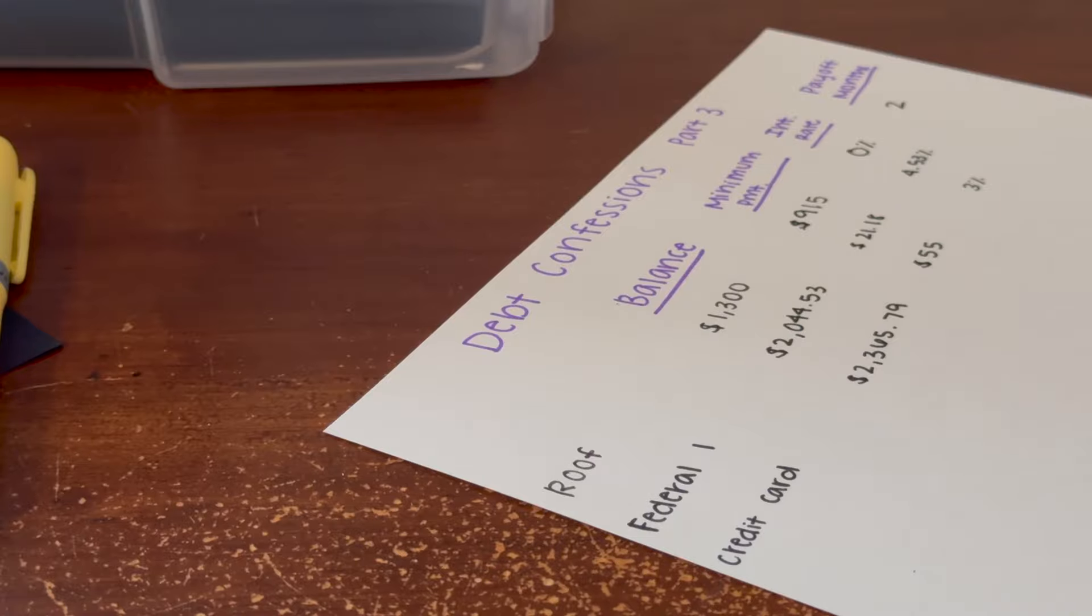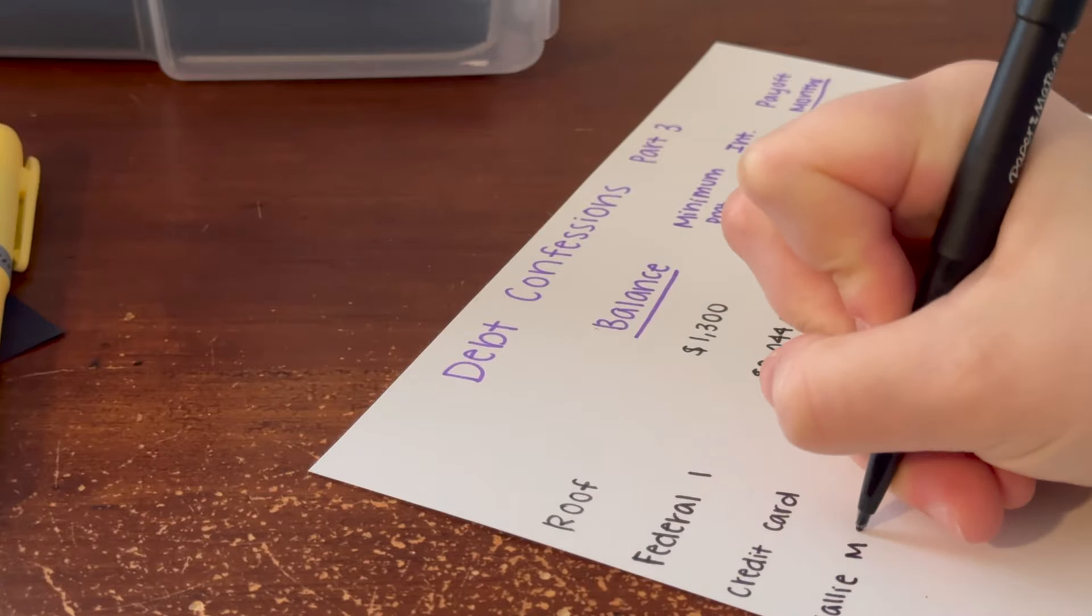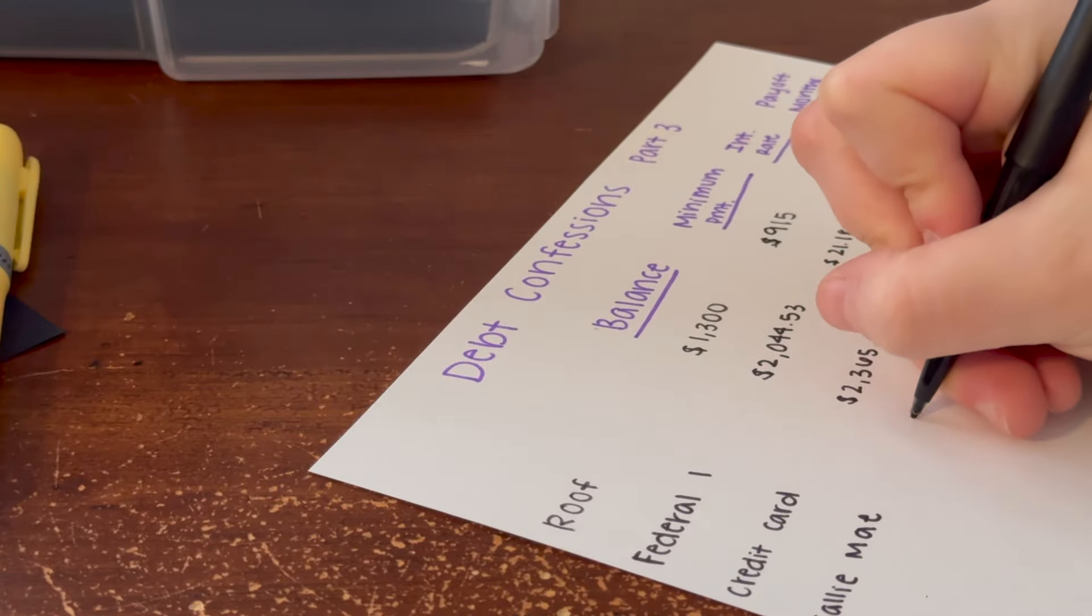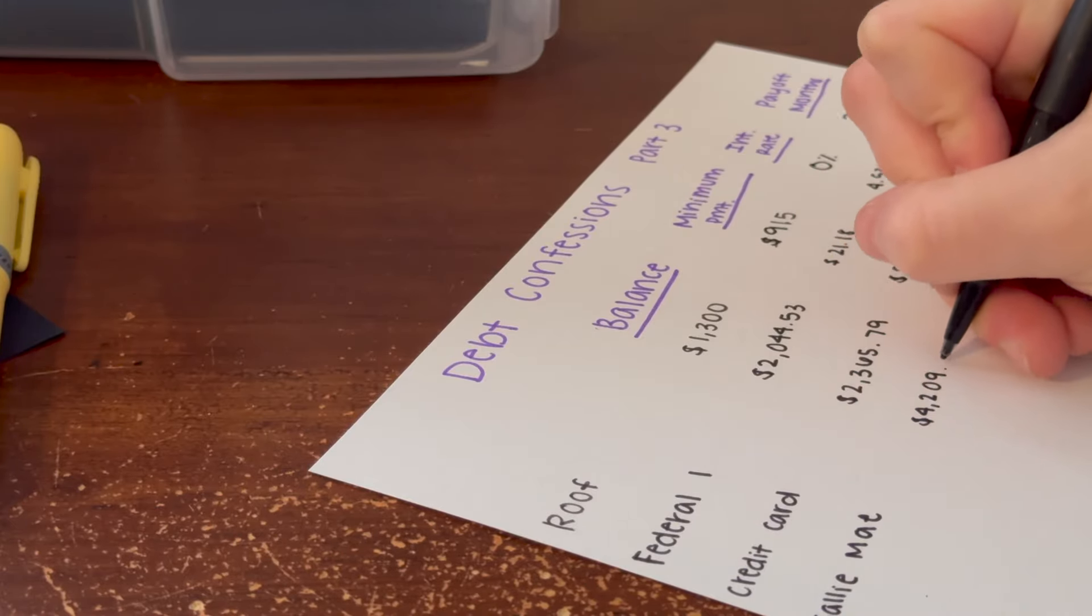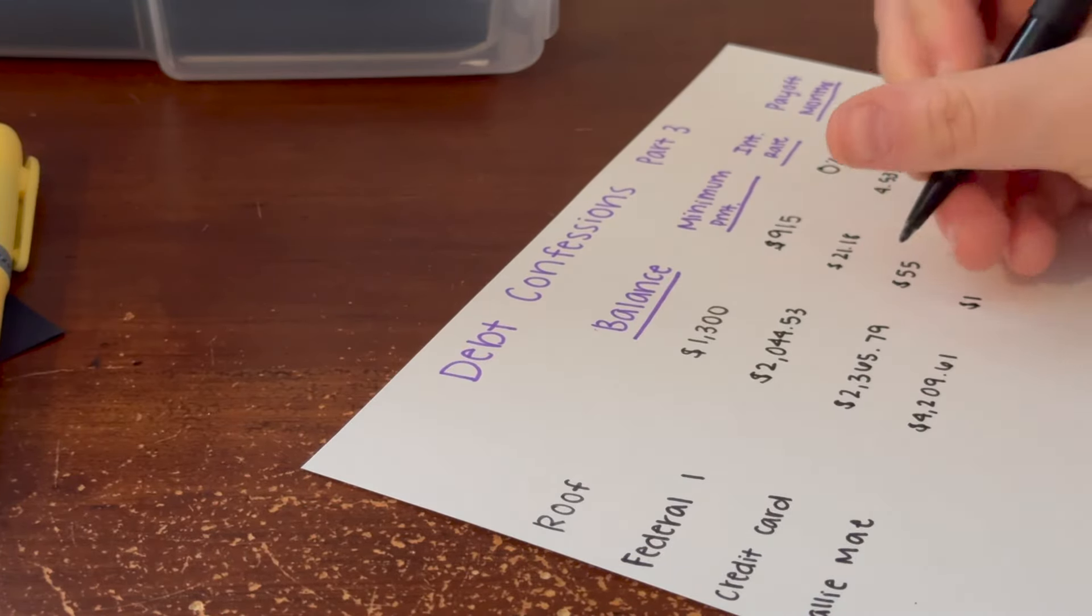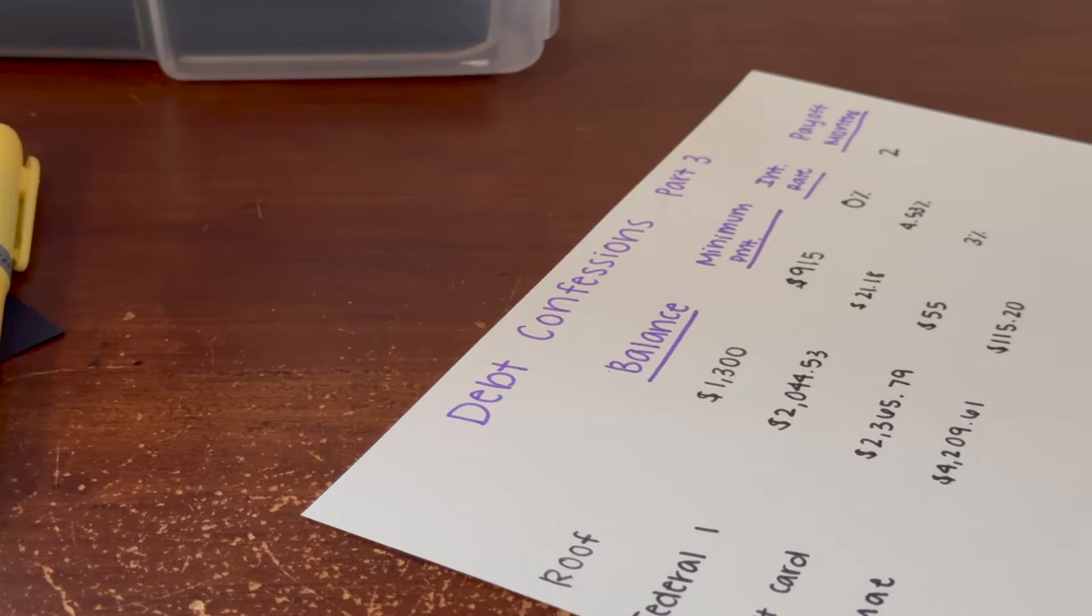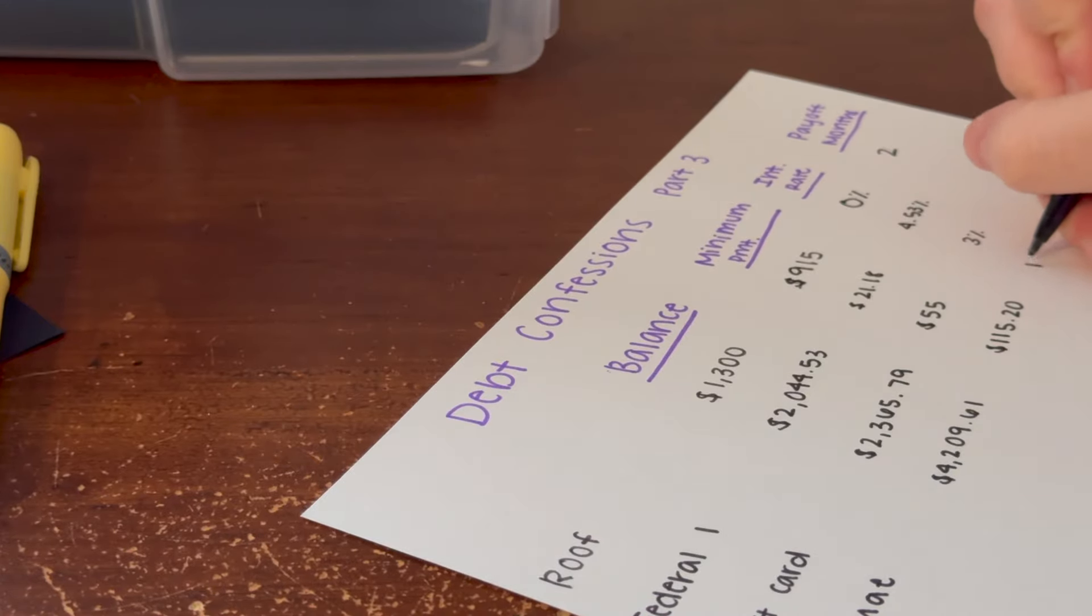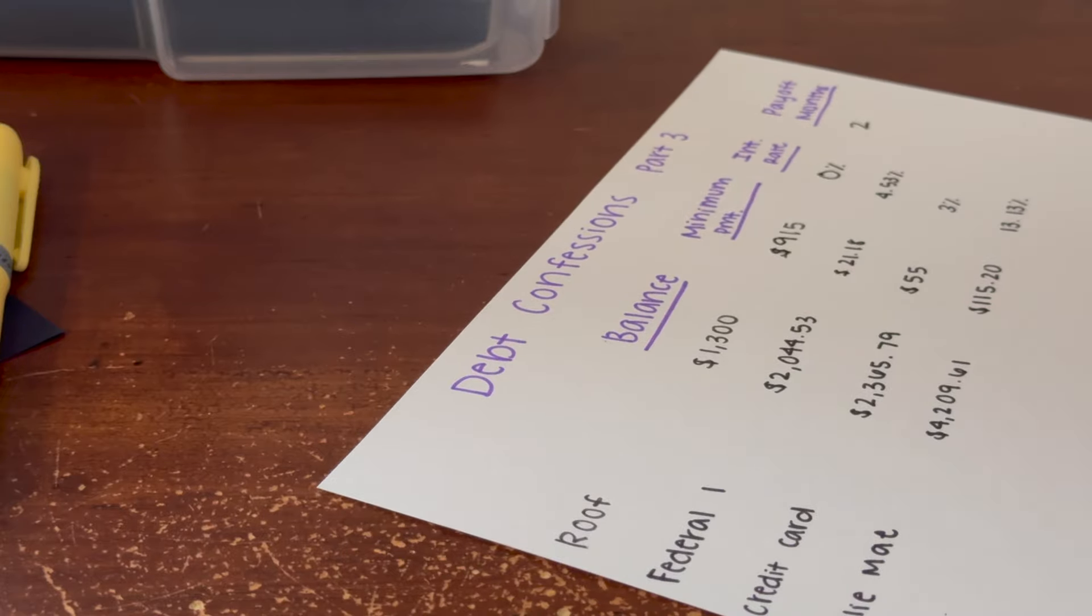The next debt is my Sallie Mae student loan and the balance on it is $5,252.61. The minimum payment is $115.20-ish, but we're just going to put $115.20. Here's the kicker: the interest rate is 13%. Got to love student loans.